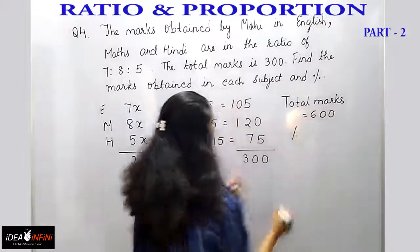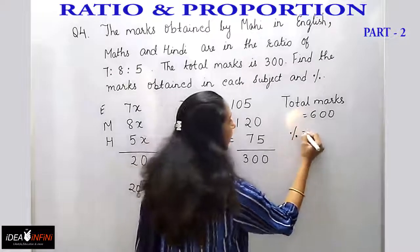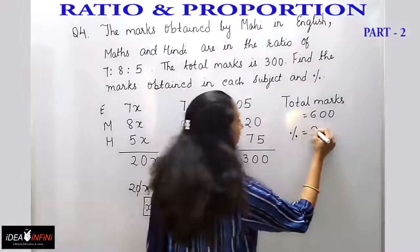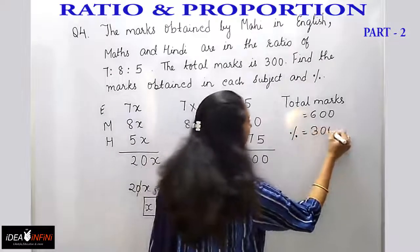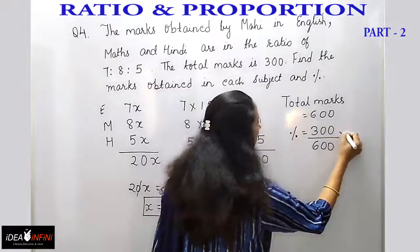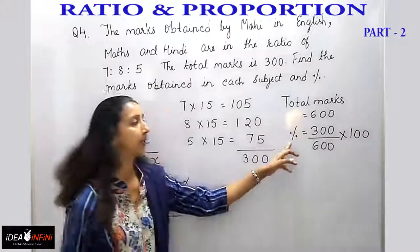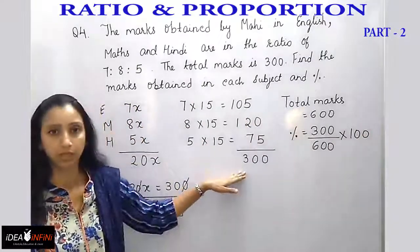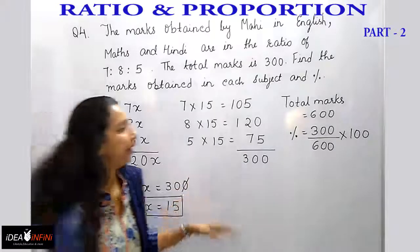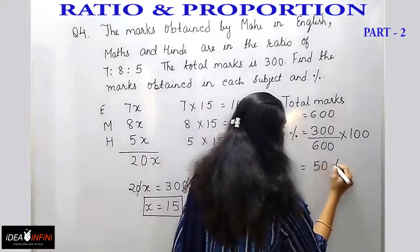The percentage obtained is calculated as marks obtained divided by total marks, into 100. That is 300 divided by 600 into 100, which gives 50%. So Mahi obtained 50% overall.